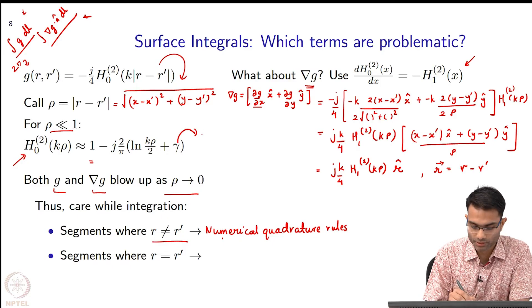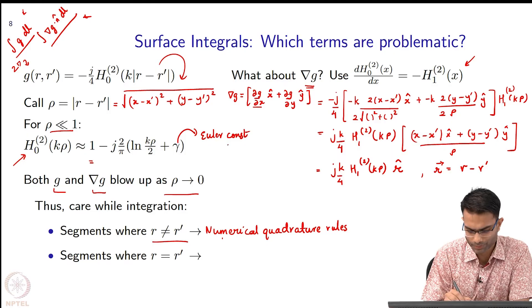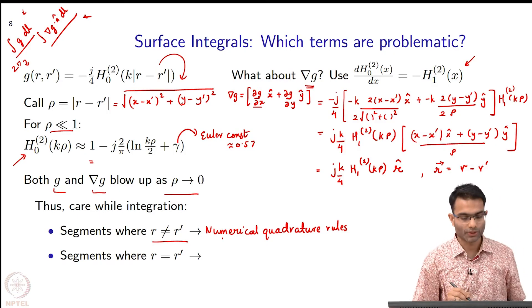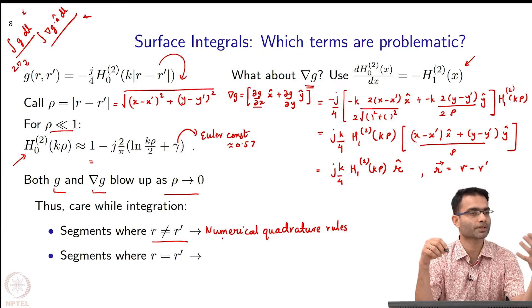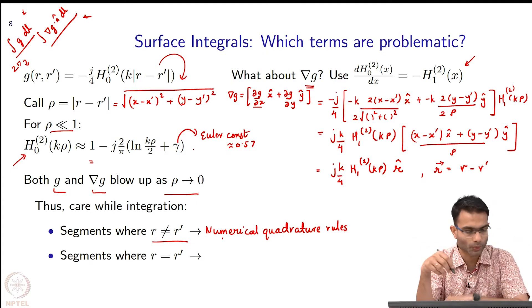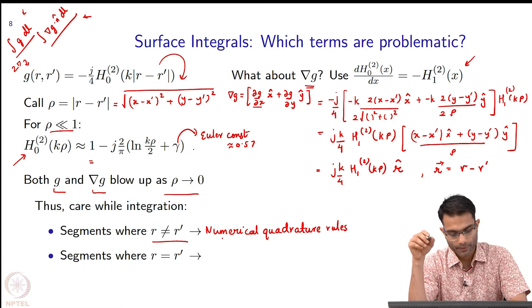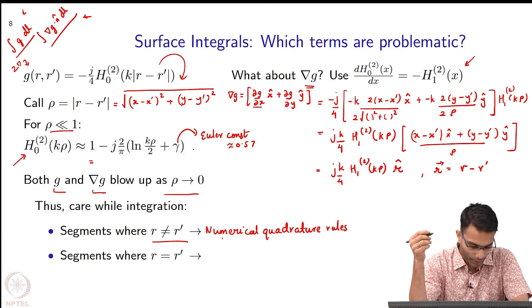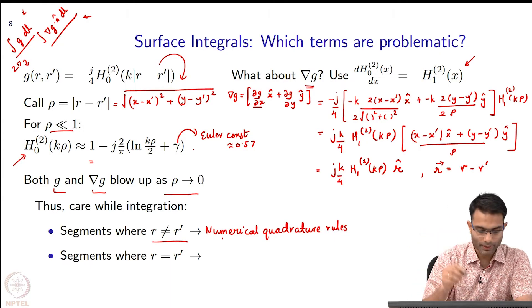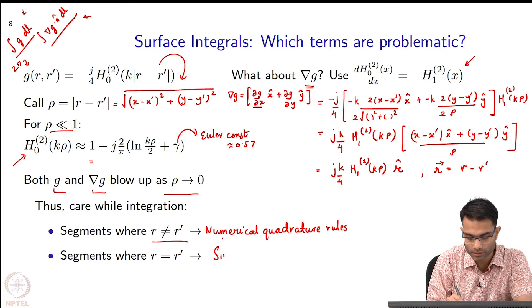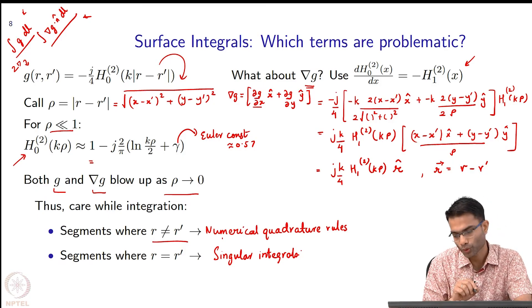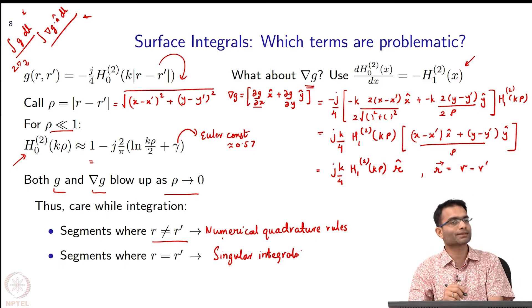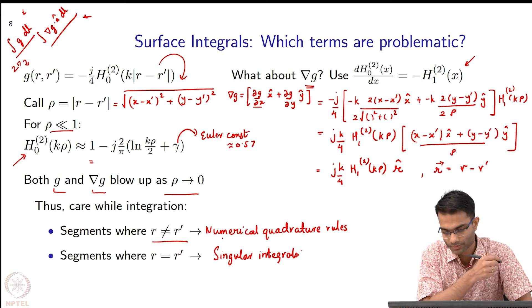This gamma over here is a constant, Euler constant, roughly 0.57 something. Where do I get these properties from? I get these properties from the handbook of Bessel functions. It is extensively documented. All these special functions have very well documented properties, graphs and all. I will include a reference to it. When r is not equal to r prime, I will use numerical quadrature rules, no problem. Segments where r is equal to r prime, those are what are called singular integrals. These have to be done carefully and we will look at these next. Those of you who have done a course on complex analysis will find some of this familiar.